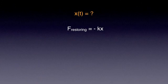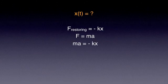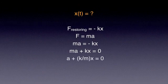On the other hand, Newton's second law tells us that the resultant and the acceleration of a body in motion are connected by the well-known equation F equals ma. Here F is minus kx, and thus we can write ma equals minus kx, or ma plus kx equals zero, or a plus k over m times x equals zero.